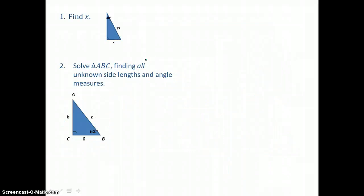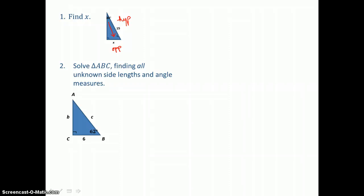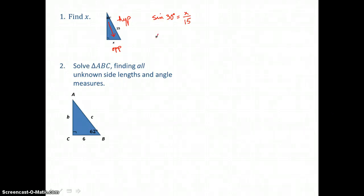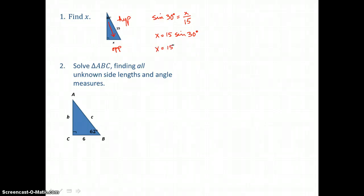We'll use the special ratio for a 30-degree angle. In this right triangle, x is the length of the side opposite the 30-degree angle and the hypotenuse is 15. Since those are the labeled sides, we use sine: sin(30°) = x/15. Multiplying both sides by 15, x = 15 × sin(30°). Since sin(30°) = 1/2, we get x = 15/2. The length of the missing leg is 15/2 units.